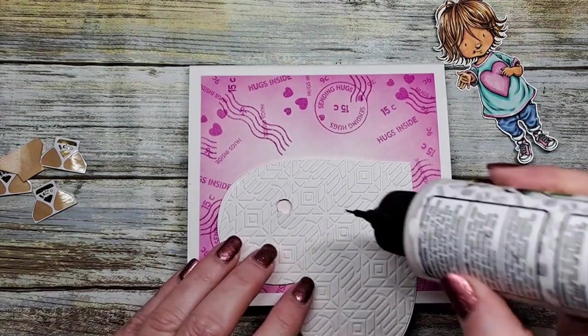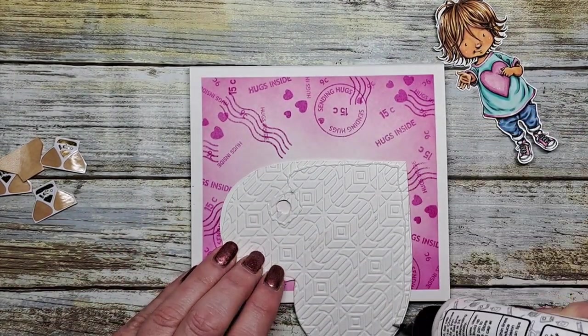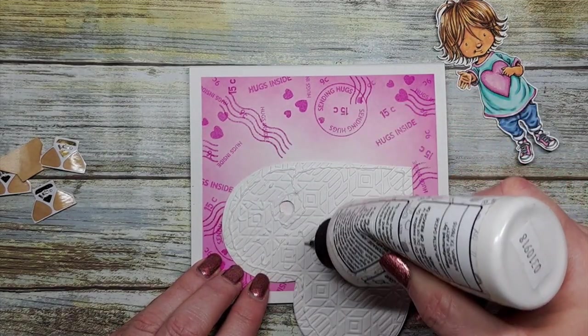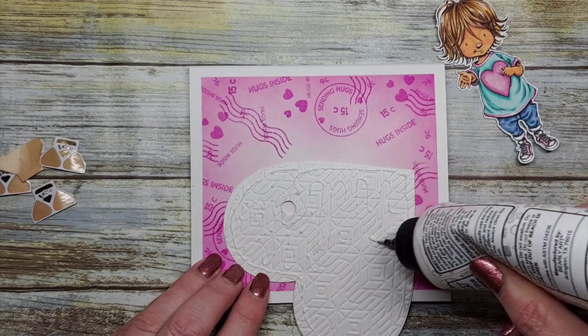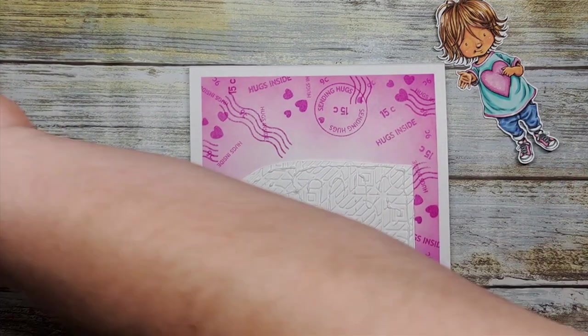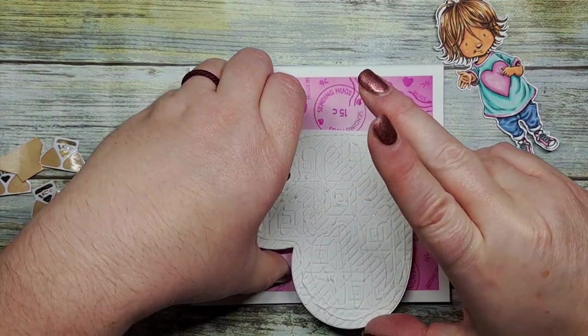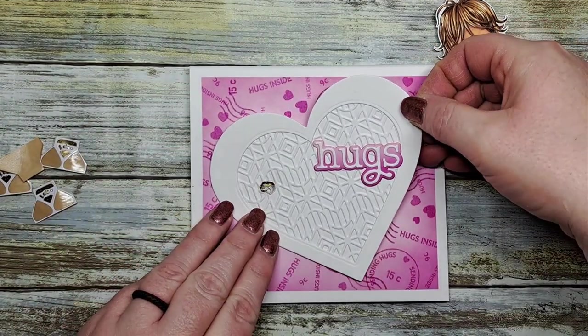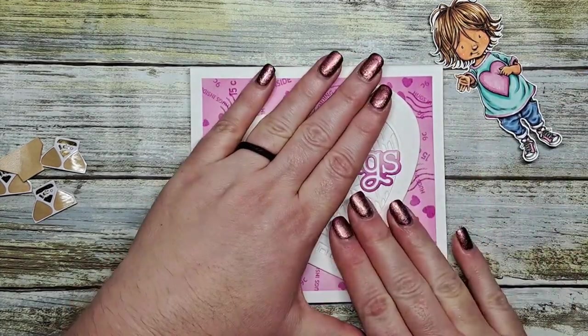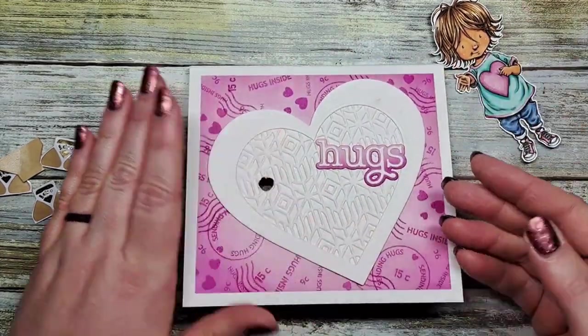Now, my hole wasn't quite in the right spot. So we cut it a little bigger. Let's adhere that embossed heart element to the front of our card. A little extra glue won't hurt because it's so textured. We're just going to line up those holes. Pull on the front through to the back. And again, you're not going to see that hole. The little girl is going to have her image placed right over top.